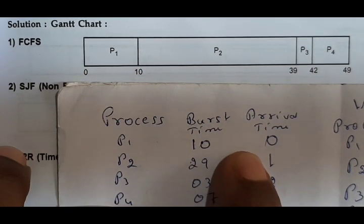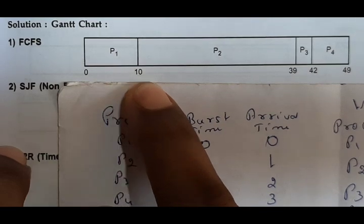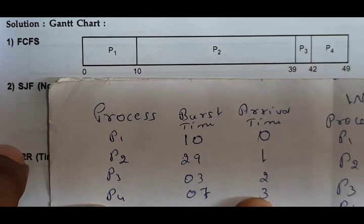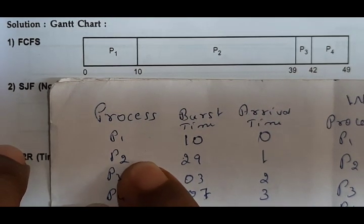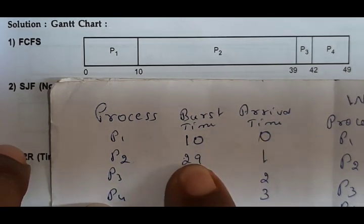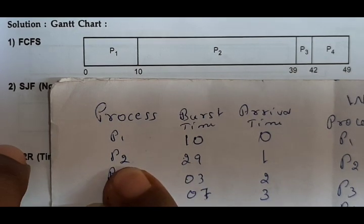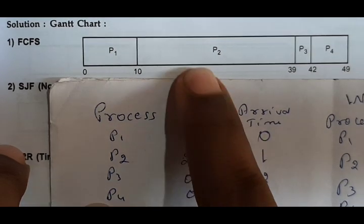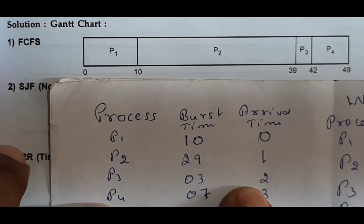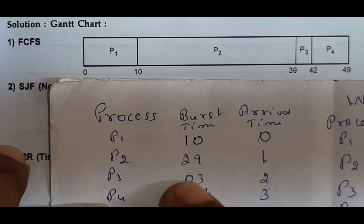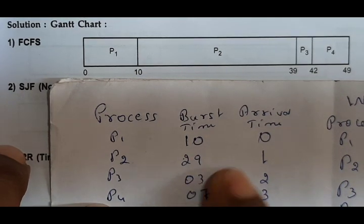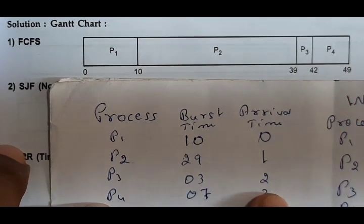After 10 milliseconds, all other processes have arrived. In FCFS, first come first serve. So next process is P2, which arrived at time 1. What is the burst time? 29. So 10 to 39. After that, next is P3 — how much? 3. So 39 to 42. Then P4 has burst time 7. So 42 to 49.